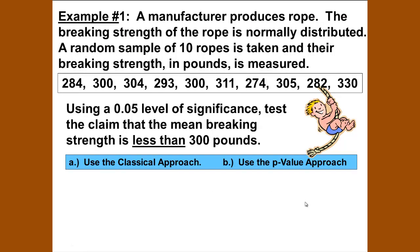Let's look at example number one. A manufacturer produces rope. The breaking strength of the rope is normally distributed, and a random sample of 10 ropes is taken and their breaking strength in pounds is measured: 284, 300, 304, 293, 300, 311, 274, 305, 282, and 330 as the breaking strength.